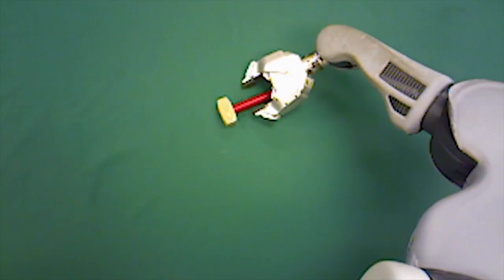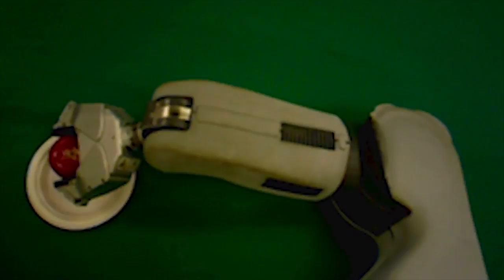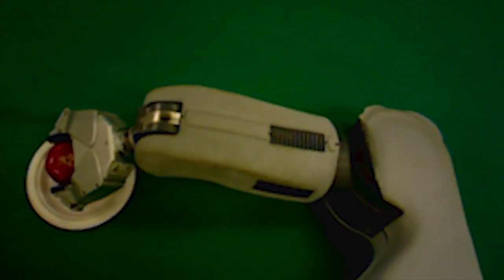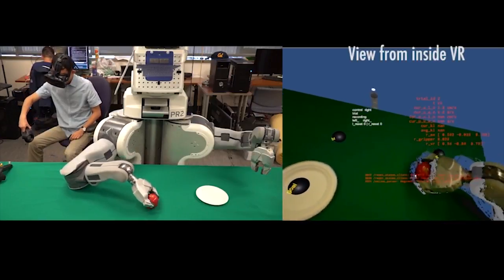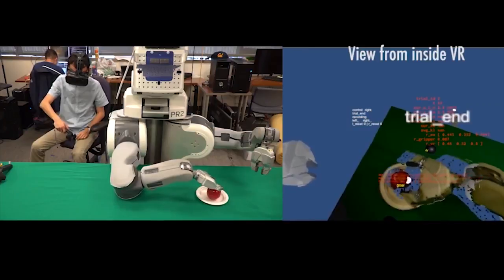Researchers trained Brett to do simple tasks, like picking up an apple and putting it on a plate, simply by showing him physically how to do it. The researchers use virtual reality to act as a sort of puppet master, guiding Brett's arm through the movements.